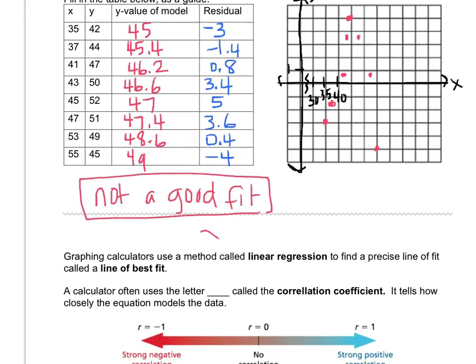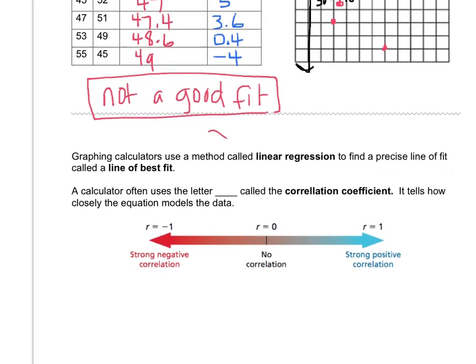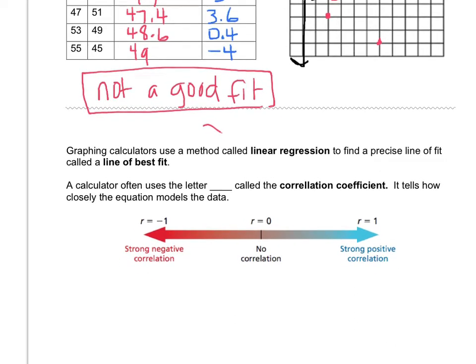We've got this thing called a linear regression on a calculator. And the linear regression tells you how well a line models your data. And there's other types, there's quadratic regressions, there's cubic regressions, there's quartic and exponential regressions. There's lots of different types of regressions. But one that we're going to look at right now is called a linear regression because we're talking about lines of fit. And it's called the line of best fit.